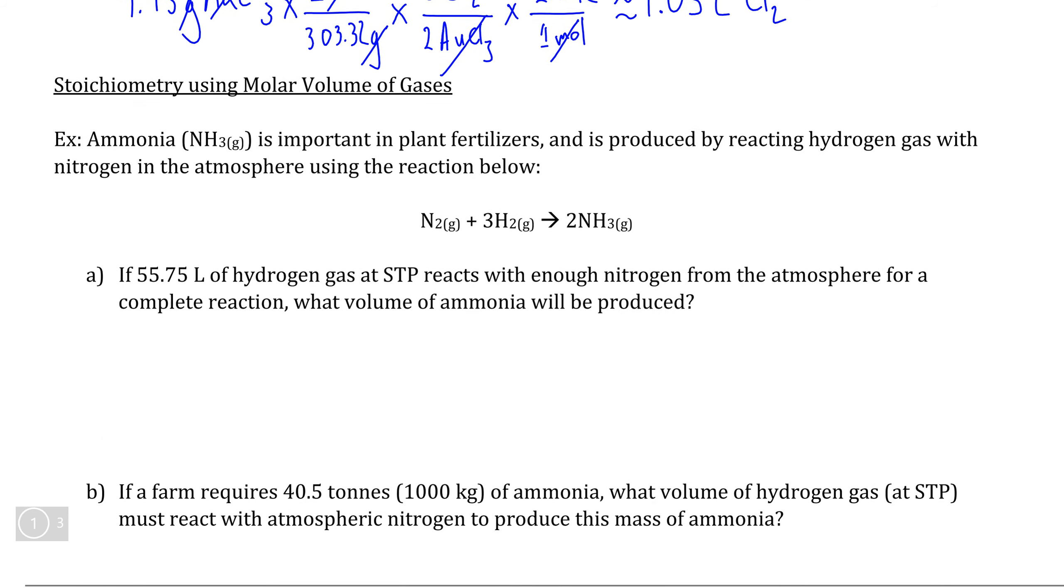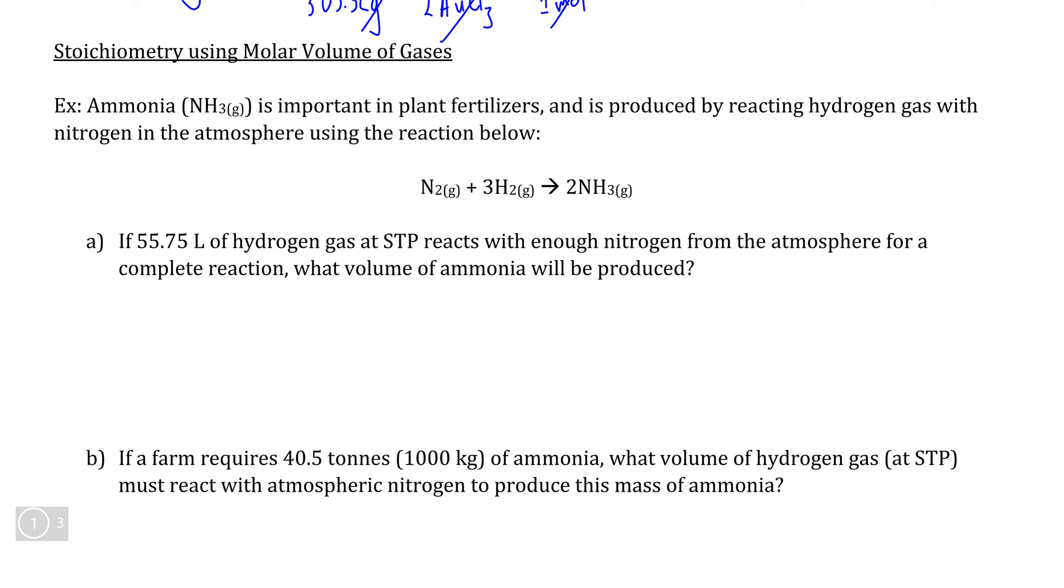We'll try one more example, at least the part A here, to deal with a reaction that is only involving gases. So in this situation, we're told that we have 55.75 liters of hydrogen gas and we're wondering how many liters of ammonia we can produce assuming that we're at standard temperature and pressure. Now from this, if we're working directly with gases and there is no environmental change, we can see a little bit of a shortcut that creeps in here.